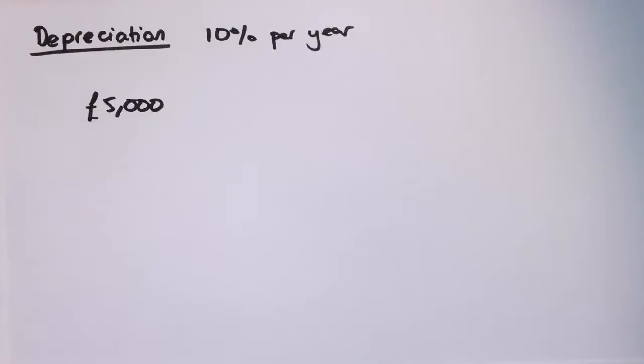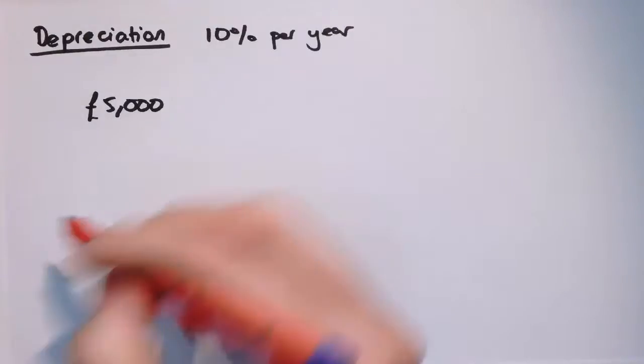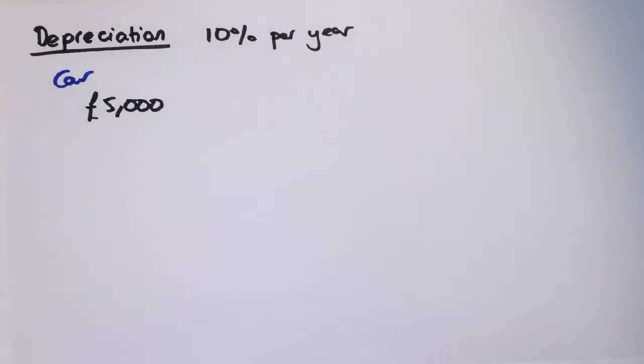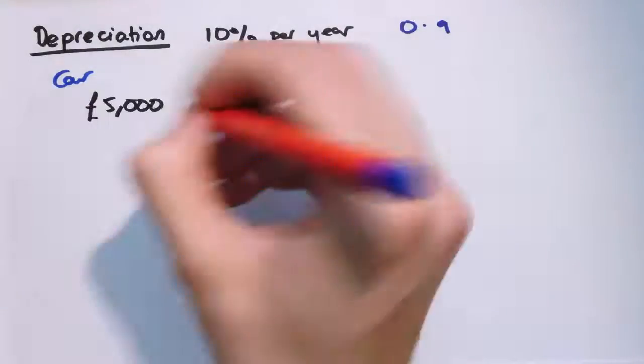Another example of the same idea is depreciation. So that's when something is decreasing in value over time. So maybe I've bought a car or something for £5,000, and each year its value goes down by 10%. And again, this might seem like a slightly unrealistic example in that the amount might go down by a different amount each year, but when companies buy cars, they will apply this sort of thing in their accounts. They'll just take a guess at how much their assets are worth and reduce it by a fixed amount like this. So it's not as unrealistic or unuseful as it seems actually. So 10% depreciation, that would give us a scale factor of 0.9 for each year.